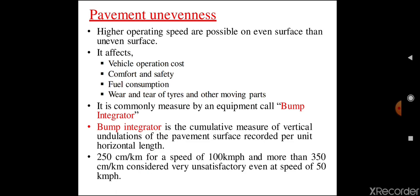If the undulations in the pavement range to 350 cm per km, such pavement is very unsatisfactory even for movement of vehicles at 50 kmph. Unevenness may be caused due to use of improper construction machinery, use of inferior pavement materials, unscientific construction, poor maintenance, local failures, etc.